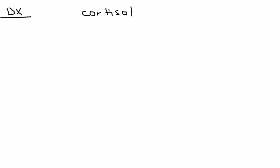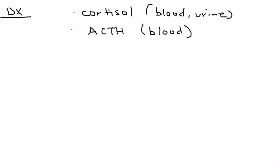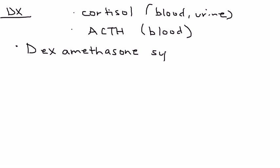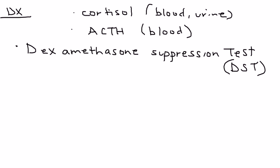To diagnose Cushing's, the first thing you measure are cortisol levels — both blood cortisol and urine cortisol. You would also measure ACTH levels in the blood. However, these alone don't give a very specific answer, so you need to perform a specific test: the dexamethasone suppression test, abbreviated DST.